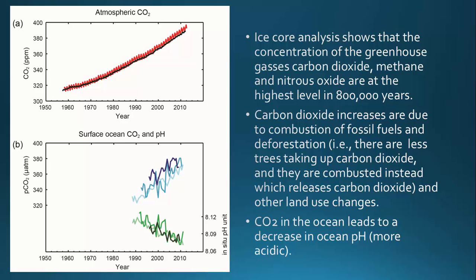How does deforestation change carbon dioxide levels? For one, if there are fewer trees — as we cut down trees — there are fewer trees on Earth that can take up carbon dioxide. Trees use carbon dioxide to create more plant tissue and to grow into bigger trees. So if they're not taking up that carbon dioxide, then it's staying in the atmosphere.